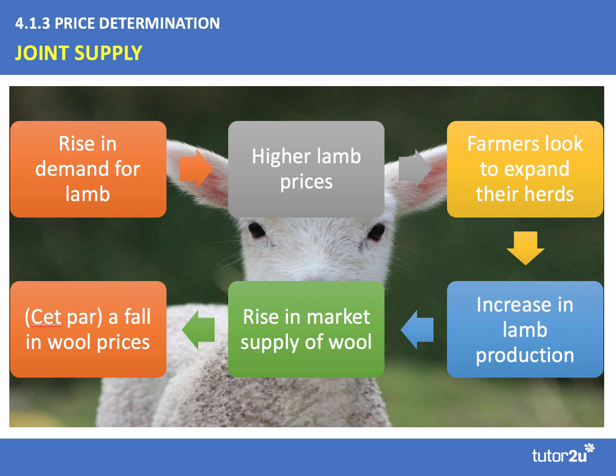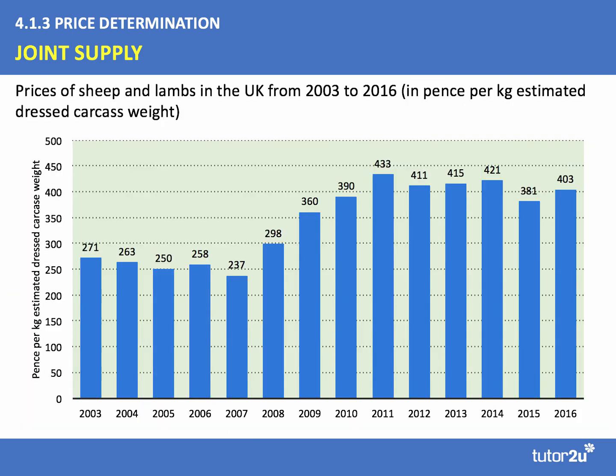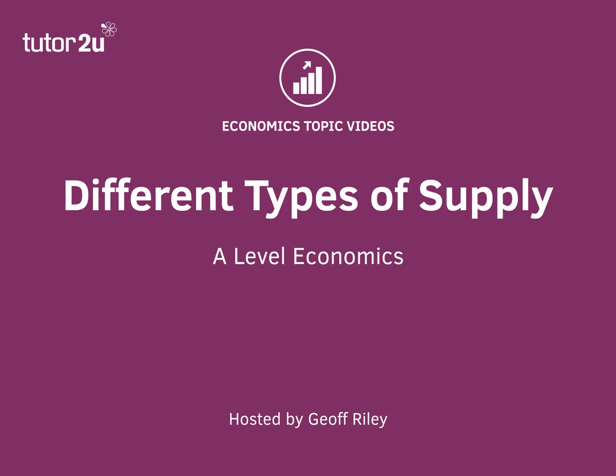Ceteris paribus, that increase in wool supply should lead to a fall in wool prices. So the output of the sheep industry will affect the supply and price of wool. As a real-world example, in the late part of the last decade there was a significant increase in the price of sheep and lambs in the UK, from about 233 pence per kilogram in terms of dressed carcass weight up to over 430 pence per kilogram. That likely led to a significant increase in the sheep population. Since then, the price of sheep and lamb has been relatively stable, although the last couple of years saw a fall in price. So in this video we've looked at two concepts: market supply and joint supply.